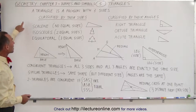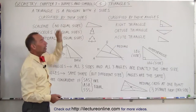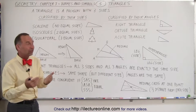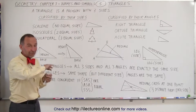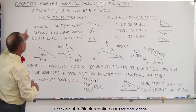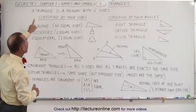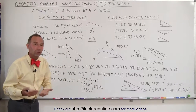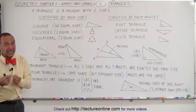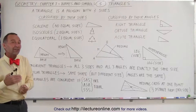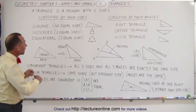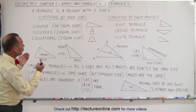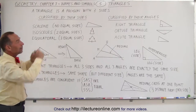A triangle is a polygon. Poly means many and gon means sides, so polygon means many sides. But in particular, a triangle is a polygon that only has three sides. Triangle means it has three angles, but that also means it has three sides. We can classify the shape of triangles both by their sides and by their angles.